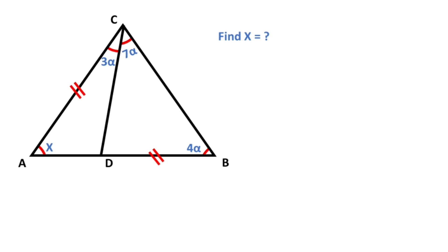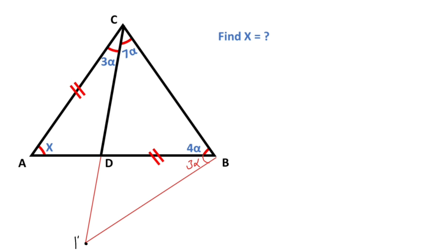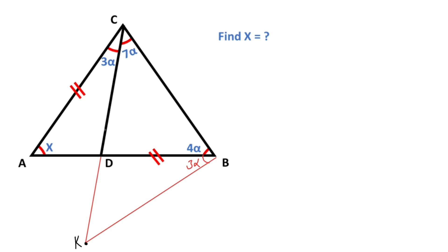First step: I want to create a triangle. So if we take here 3 alpha, and let's extend corner D, let's call here point K. Note that angle KCB and angle KBC are equal. Therefore, the length of KC must be equal to the length of KB.